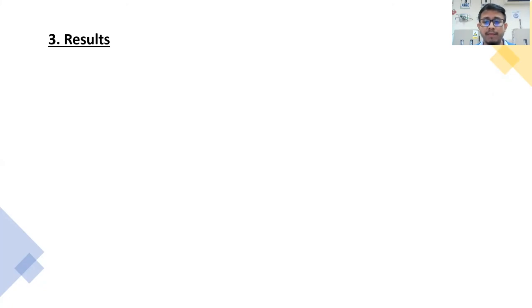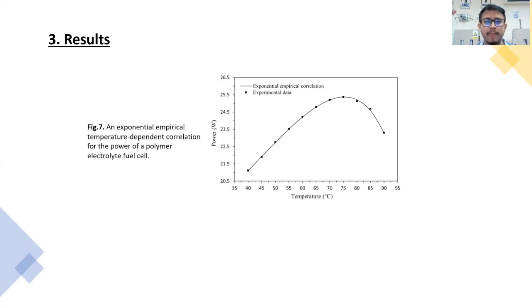As a second part, we have the results: the effect produced by the temperature on the output power of the fuel cell operating at high current density. In figure 7, it shows the output power as a function of the temperature. As we can see, for a temperature range between 40 to 75 Celsius degrees, the output power increased. After that, the output power starts decreasing.